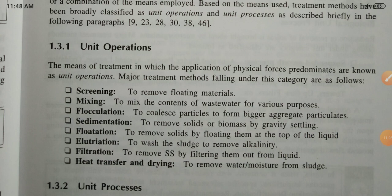Major treatment methods falling under unit operations include: screening to remove floating material, mixing the contents of wastewater for various purposes, flocculation to collect particles and form bigger aggregates, sedimentation processes to remove solids, flotation to remove solids by floating them to the top, filtration to remove suspended solids, and heat transfer and drying to remove moisture from sludge.